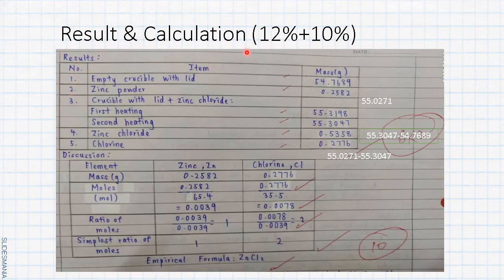Next is about result and calculation. You must jot down the empty crucible with lid mass and the mass of zinc powder. Here we need to jot down the sum of the zinc powder and the crucible with lid is 55.0271 grams.